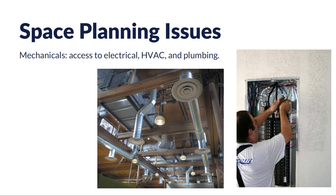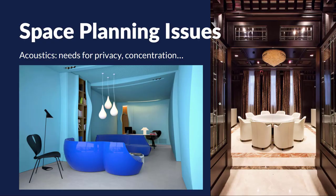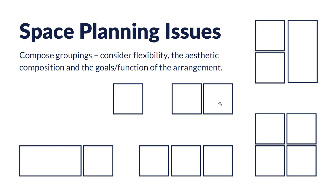We also have to keep in mind the mechanicals. We need to maintain access to electrical, HVAC systems, and plumbing. The heating, ventilation, and air conditioning — HVAC — can be exposed and obvious in some spaces or built into the drywall and hidden in others. But maintaining access to those should something go wrong or things need to be updated is very important. We need to think about acoustics as well — some spaces will need privacy and concentration. You may have private conversations or need uninterrupted time for work, so thinking about the acoustics, what rooms are next to each other, and how open or closed they are is very important.